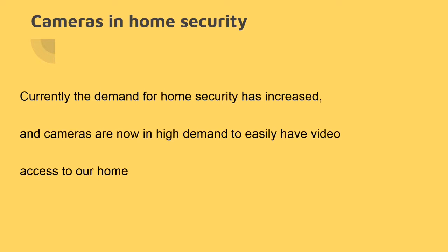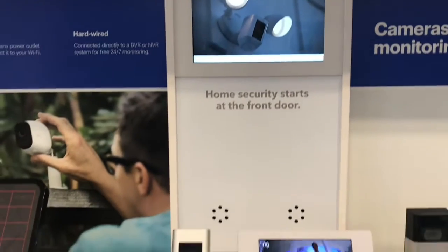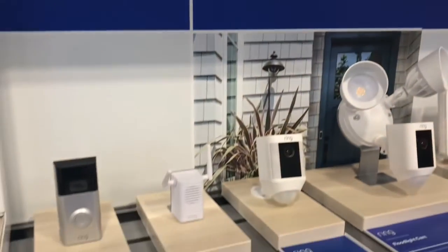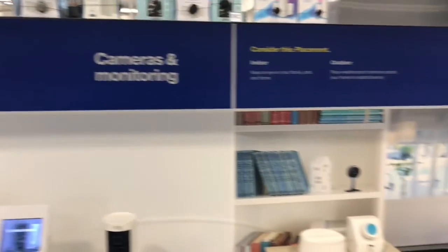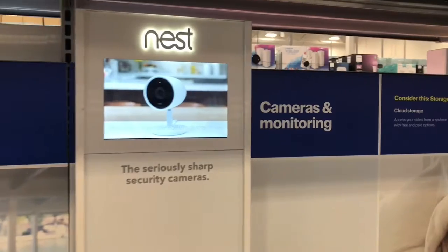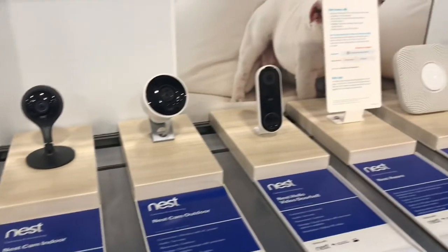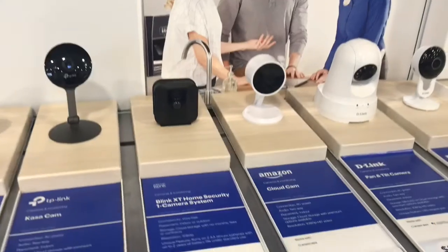Currently the demand for home security has increased and cameras are now in high demand. At Best Buy, we also learned about the Google Nest cameras. Nest cameras are considered the best for home security because of the major ecosystem they provide — a whole-home security ecosystem that includes doorbells and other devices, giving one-app convenience. Many cameras do the same things individually, but Nest's integrated ecosystem makes it much easier to use, especially for older customers, along with Google's reputation for great build quality.